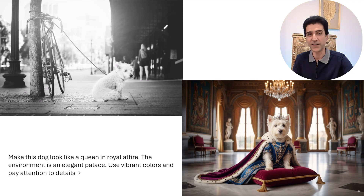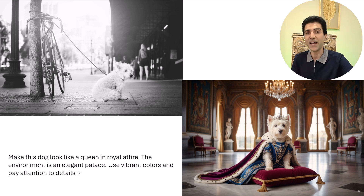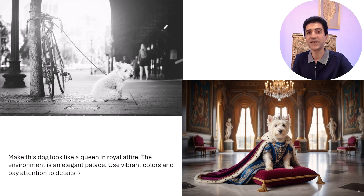Next one is our royal dog. You upload a simple dog photo and boom — he is wearing a crown, velvet robes, sitting in a palace like he just won Game of Thrones. The AI adds tiny details: gold stitching, chandeliers in the background. But sometimes it over-commits. I had one version where the dog's ears were sticking to the crown like antennas — honestly, that made it even better. Perfect material for greeting cards, memes, or just pranking your friends.